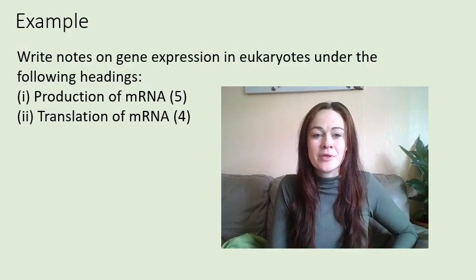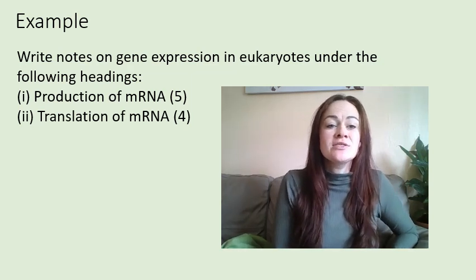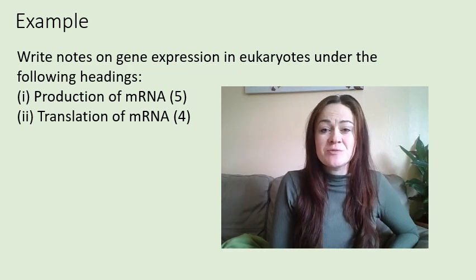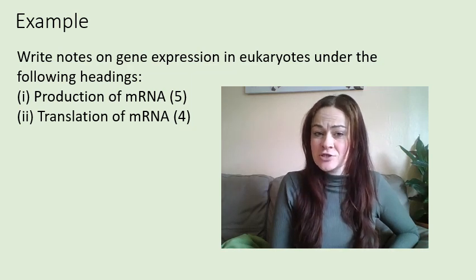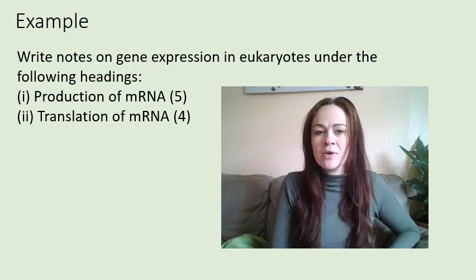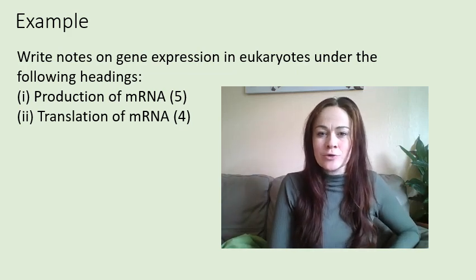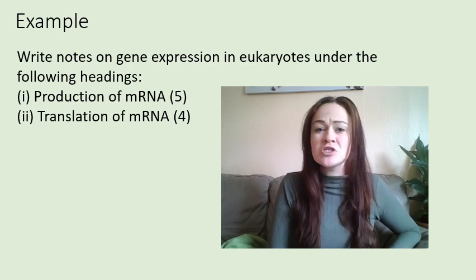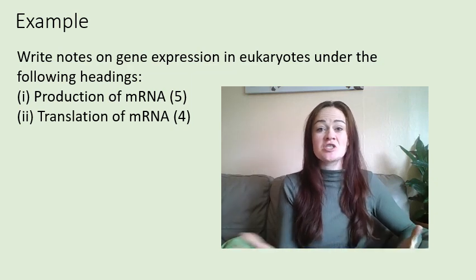Let's look at an example from key area three of both Higher Biology and Higher Human Biology. The question reads: 'Write notes on gene expression in eukaryotes under the following headings. Part one: Production of mRNA — five marks. Part two: Translation of mRNA — four marks.' You should immediately think: section one needs to be a bit longer than section two. Note that the phrase 'in eukaryotes' is relevant to Higher Biology students; Higher Human students just need to know gene expression in general.